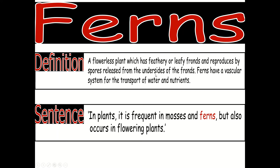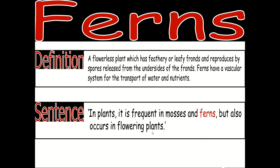Ferns — a flowerless plant which has feathery or leafy fronds and reproduces by spores released from the underside of the fronds. Ferns have a vascular system for the transfer of water and nutrients in plants. It is frequent in mosses and ferns but also occurs in flowering plants.